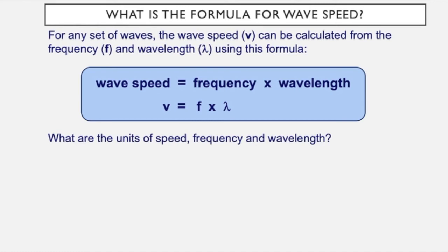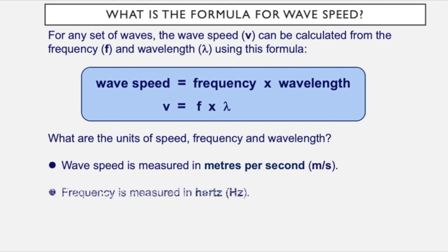What are the units of speed, frequency and wavelength? Well wave speed is measured in meters per second, frequency is measured in Hertz, and wavelength is measured in meters. So let's do an example of that.